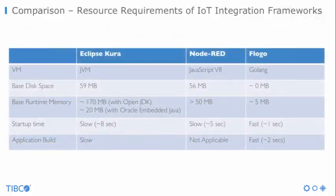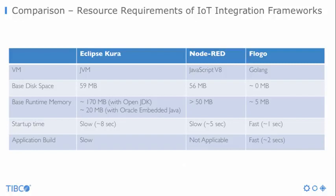Here is a comparison of resource requirements. You see Eclipse Kura, which is based on Java; Node-RED, based on JavaScript and Node.js; and FLOGO with Golang. The comparison shows disk space, memory usage, startup times, and application build — and there are simply huge differences, especially if you want to deploy on very small devices with limited memory.